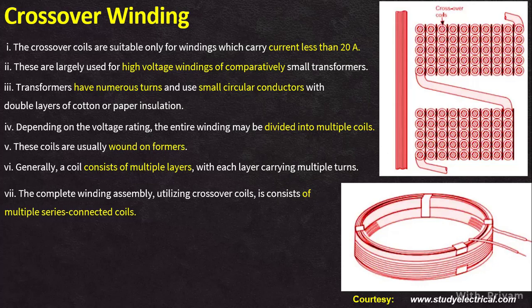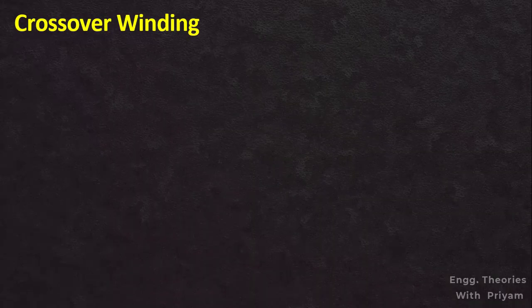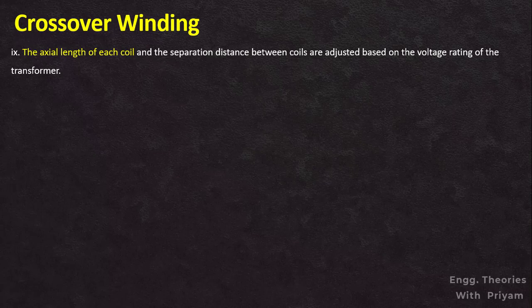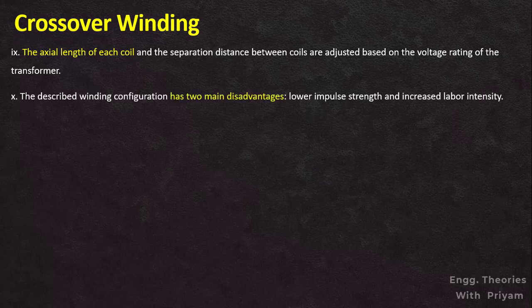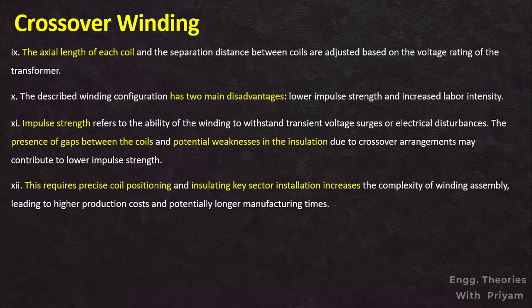The assembly is positioned over the limb of the core. Insulating key sectors are used to separate the coils and create gaps between them, allowing free oil circulation for efficient cooling. The axial length of each coil and the separation distance between coils are adjusted based on the voltage rating of the transformer to optimize performance and electrical characteristics. The crossover winding configuration has two main disadvantages: lower impulse strength and increased labor intensity. Lower impulse strength means reduced ability to withstand transient voltage surges, while the need for precise coil positioning and insulating key sector installation increases manufacturing complexity, production cost, and potentially longer manufacturing times.